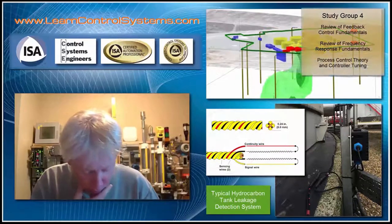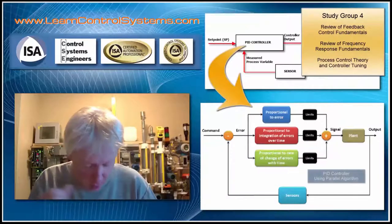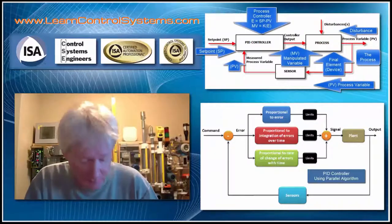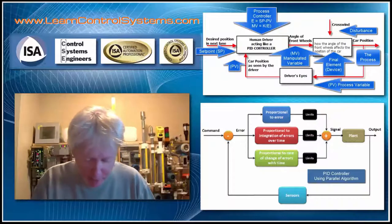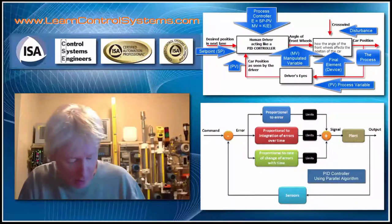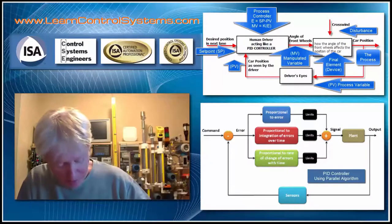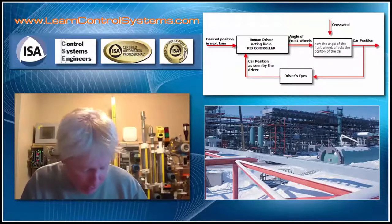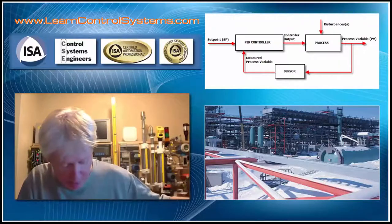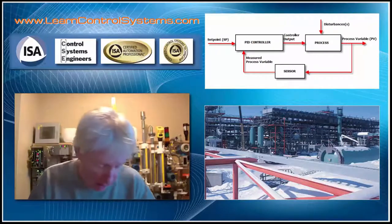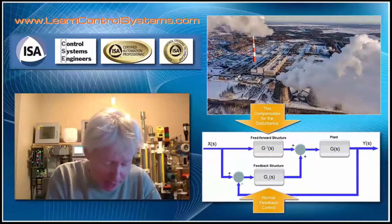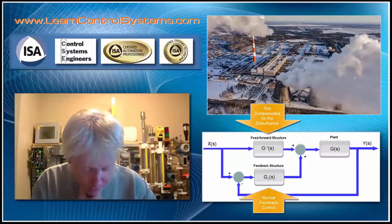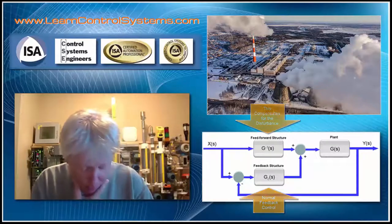Our next group is group 4 — a review of feedback control fundamentals. What exactly is feedback control and how do we use it? We'll also look at feedforward and techniques for controlling loops. We'll look at disturbances — for example, a hot product coming through a pipe when a cold wind comes in. A freak storm drops temperatures from 80 to 32 degrees in one day, the furnace can't heat it up enough, and the product comes out cold. We have to learn to compensate: accelerate the heat above normal so the product is at the right temperature when it gets there.